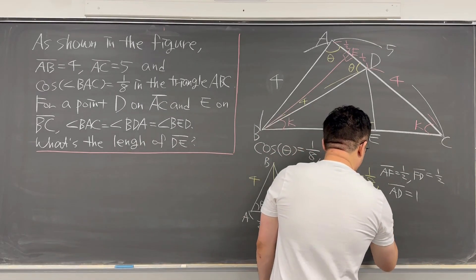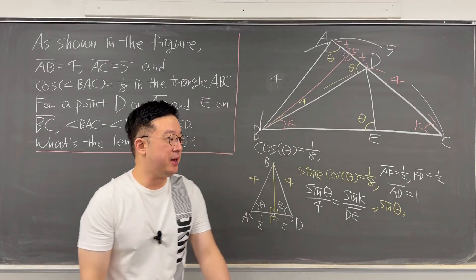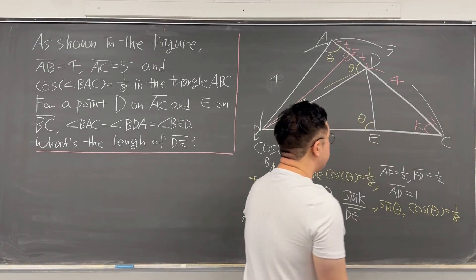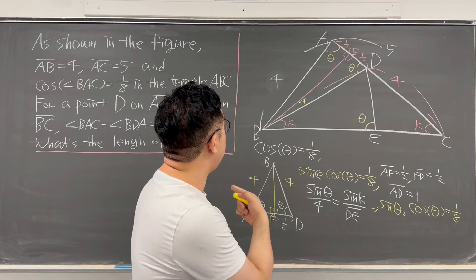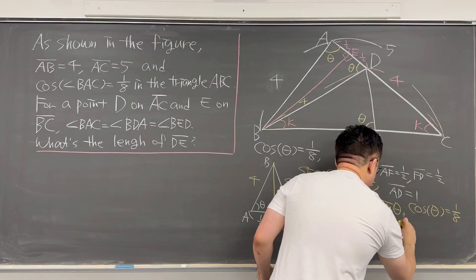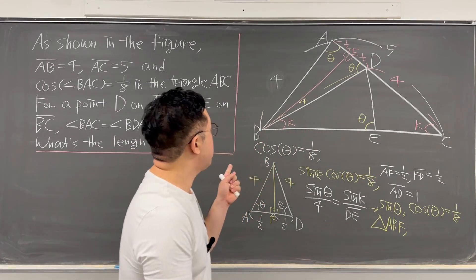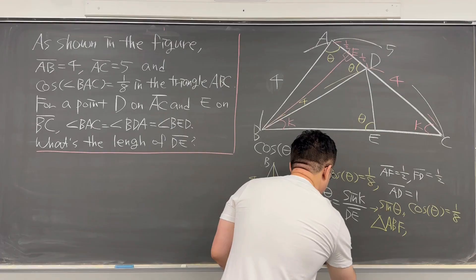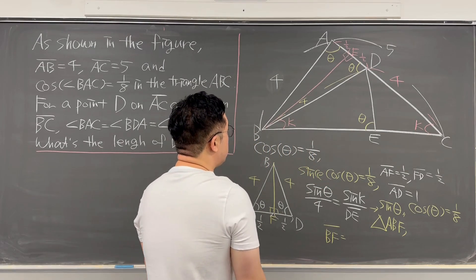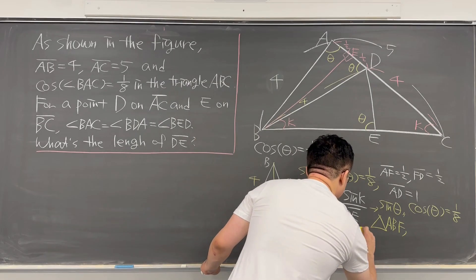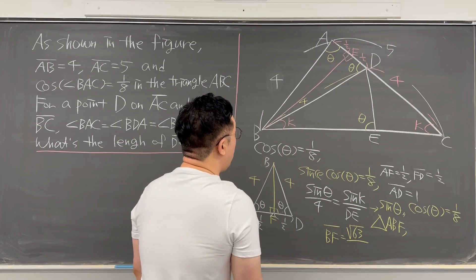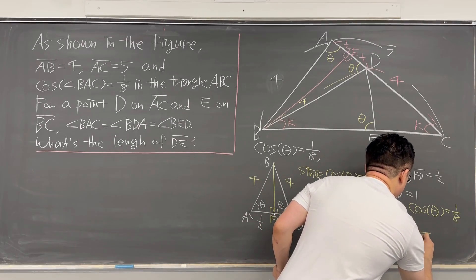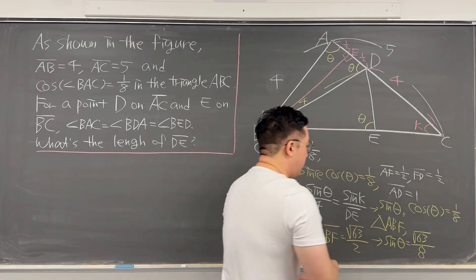For the sine theta part, we use cosine of theta equals 1/8 and work on triangle ABF. Since AF equals 1/2, using the Pythagorean theorem, BF equals square root of 63 over 2. So sine theta equals square root of 63 over 8.